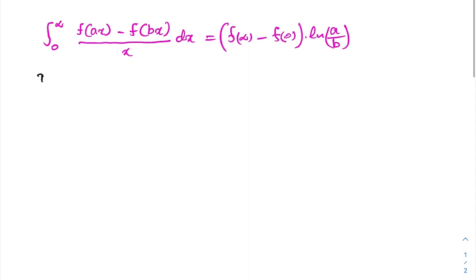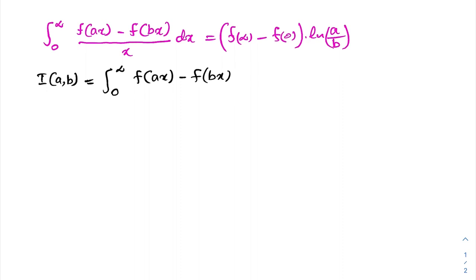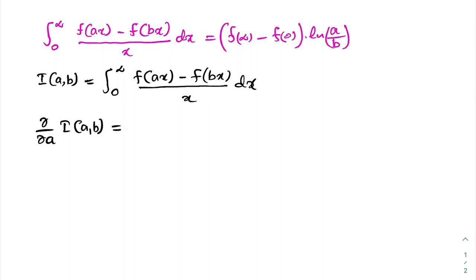I'm going to take I(a,b) equal to the integral from zero to infinity of [f(ax) minus f(bx)] over x dx. Then I'm going to take the partial derivative — specifically, I'm going to differentiate with respect to a.